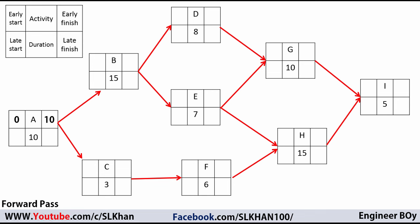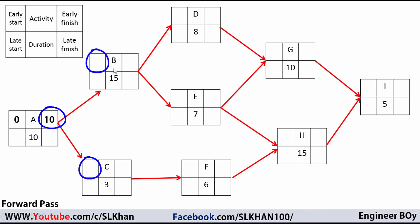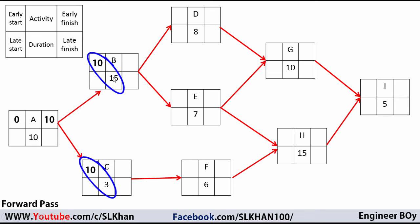The early finish of Activity A becomes the early start of Activity B and C. We then add the durations: for B it is 10 plus 15, which equals 25; for C it is 10 plus 3, which equals 13.